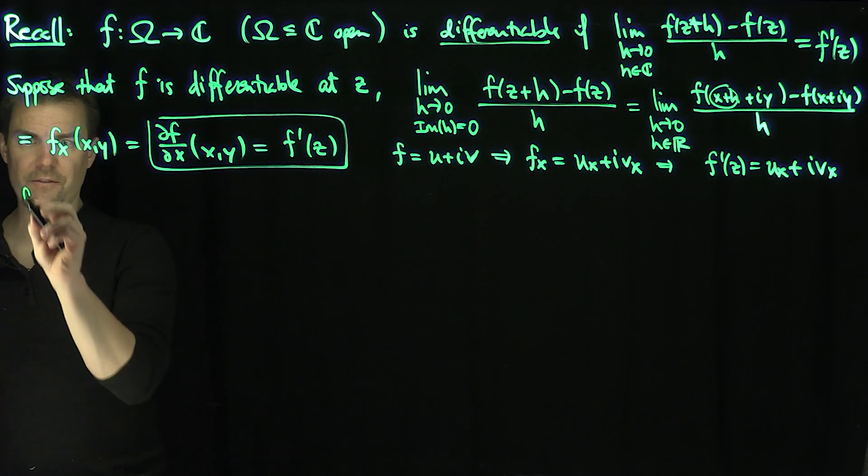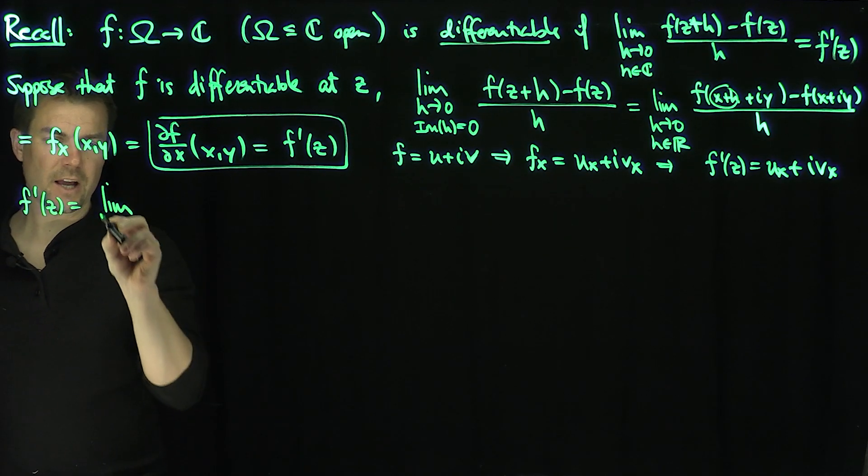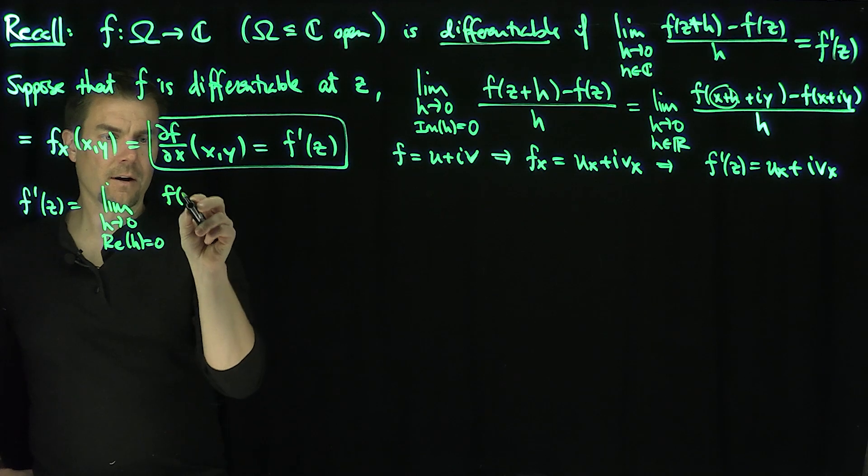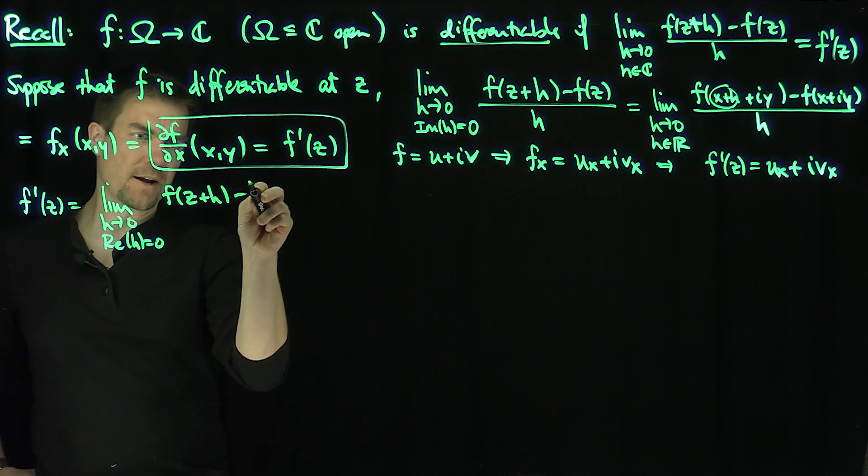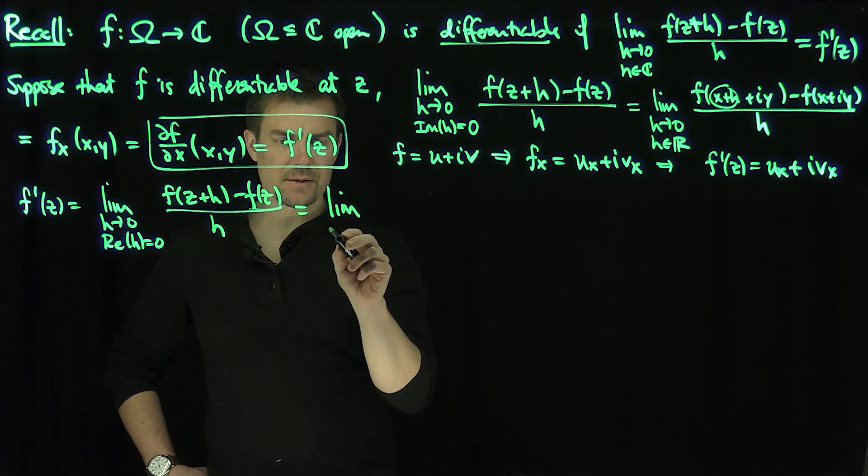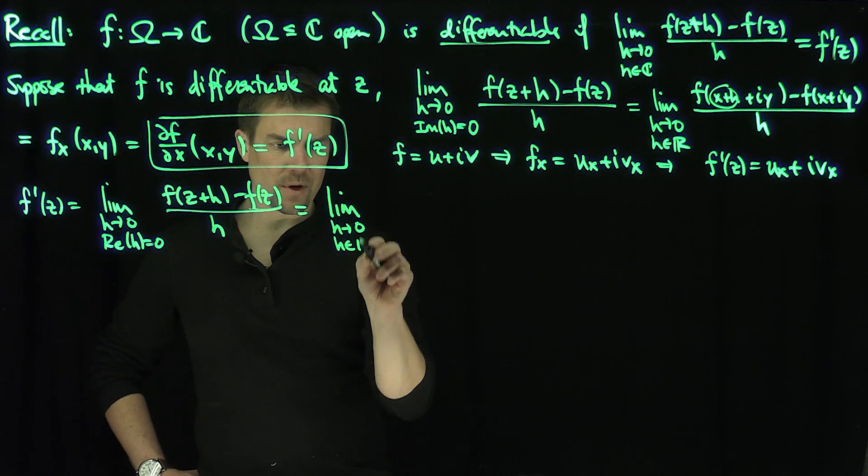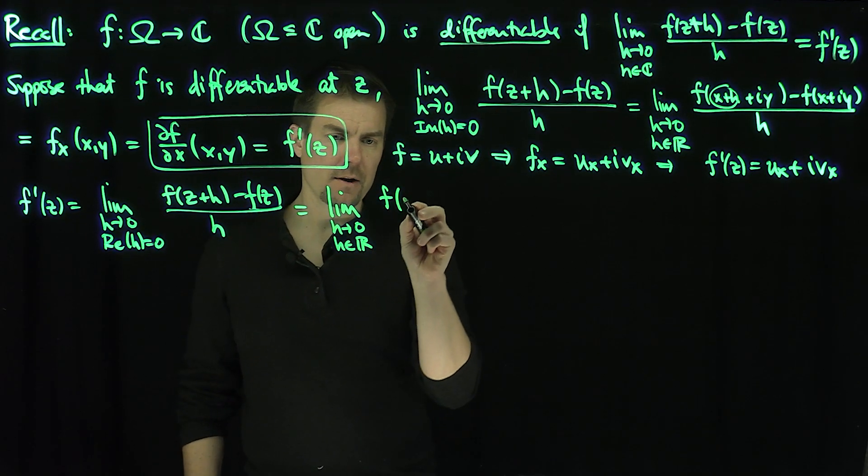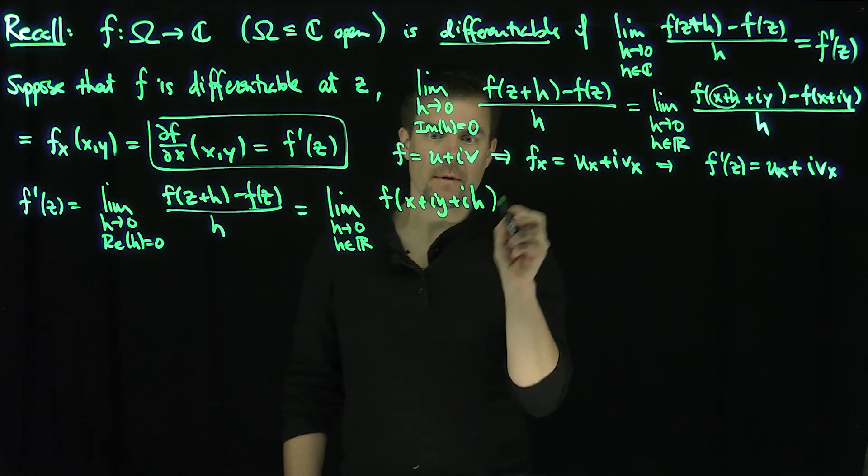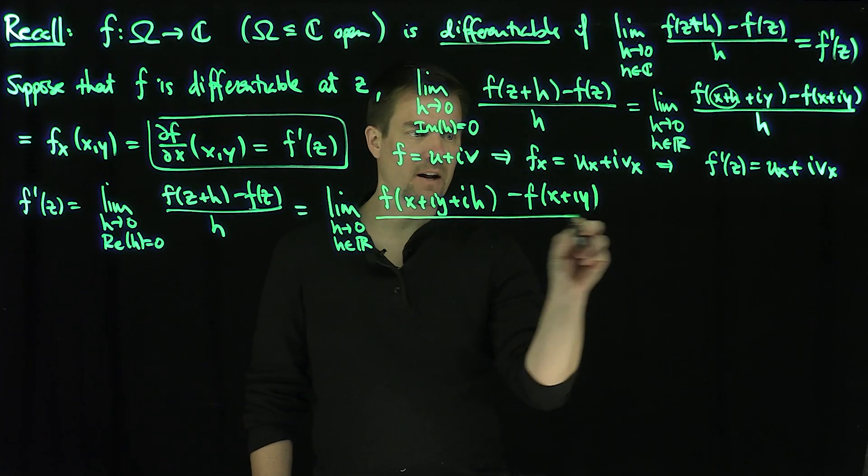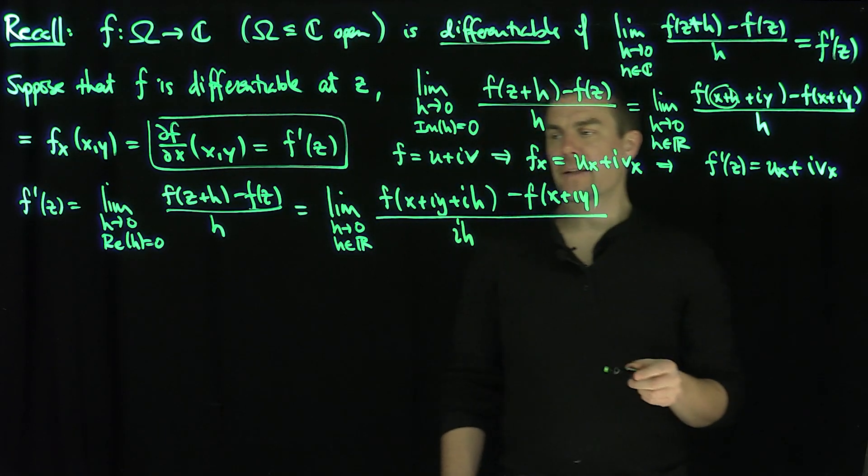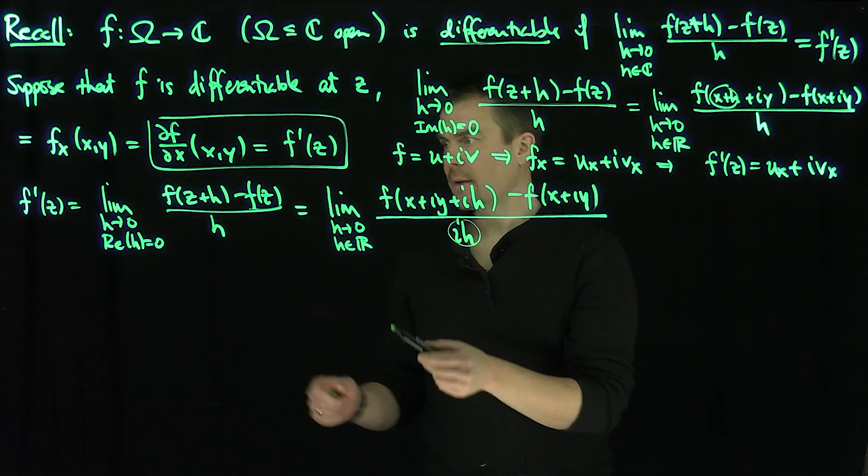Also, f'(z) equals the limit as h goes to 0 with real part of h equal to 0, of [f(z+h) - f(z)]/h. I can write this as lim(h→0,h∈ℝ) [f(x+iy+ih) - f(x+iy)]/(ih), where ih is purely imaginary. I'm replacing h with i times h.